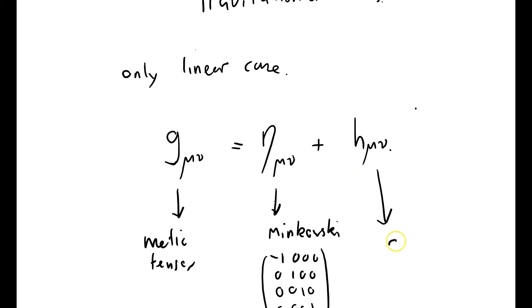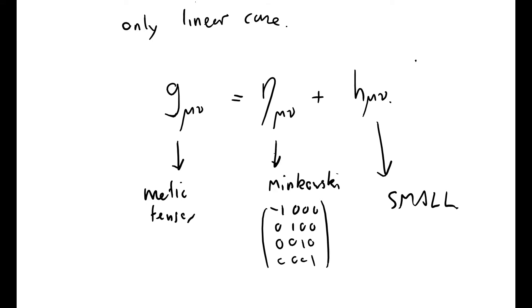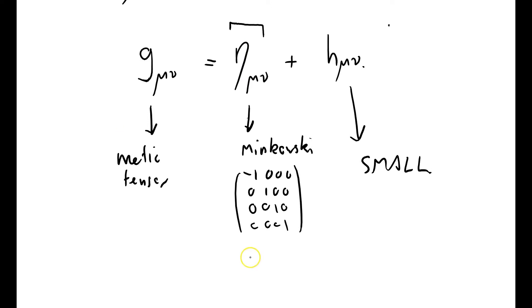Plus this thing h, which is small. So my linearization is to consider a small perturbation on flat space. A small perturbation on flat space. The crucial observation is that the Minkowski metric is constant.